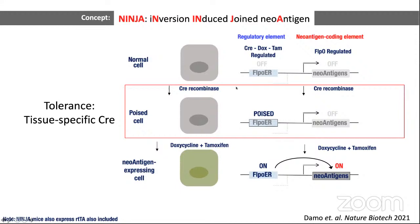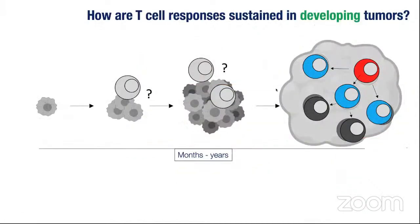When we want to study tolerance, we use tissue-specific CRE recombinase genes crossed into our mouse. The first story I'll tell was recently published and focuses on understanding how T cell responses are sustained in the context of a developing tumor. Tumors develop over months or years in a person, and we don't have a good understanding of how the T cells necessary to maintain or elicit therapeutic responses are maintained over the course of tumor development — how do they persist in the tumor microenvironment over many months or years?